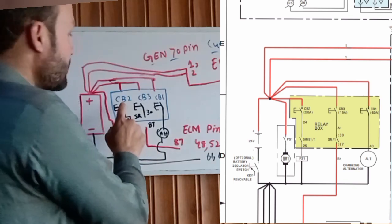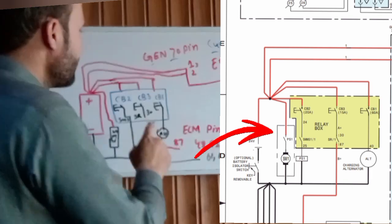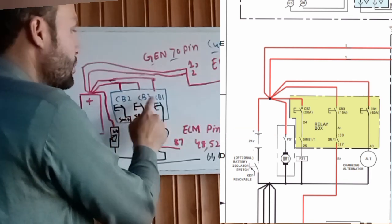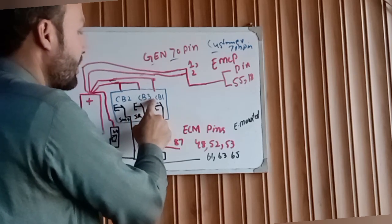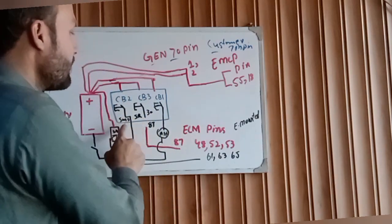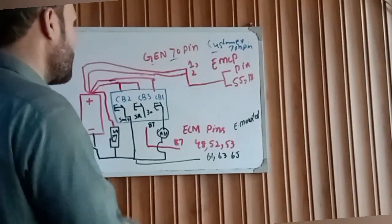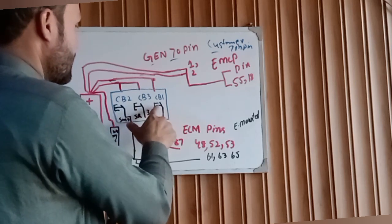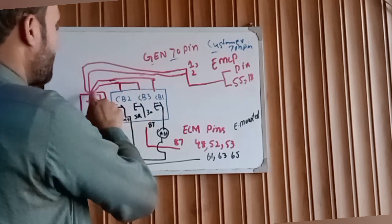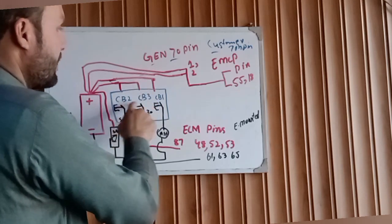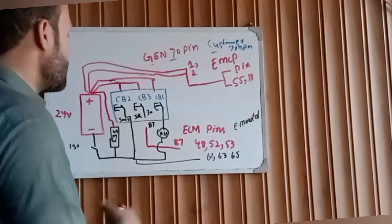As you can see here in the fuse box: CB2, CB3, CB1. What is meant by CB1, CB2, CB3? Circuit breaker number two, circuit breaker number three, circuit breaker number one. The relay box has three tiny circuit breakers. Then as you can see, the symbol of the circuit breakers takes supply directly from the battery input in the relay box to each circuit breaker, then out.